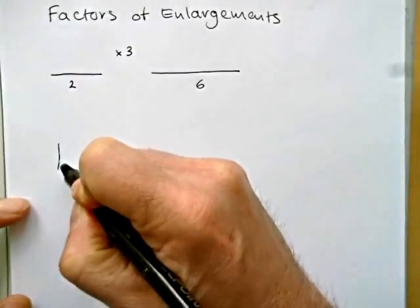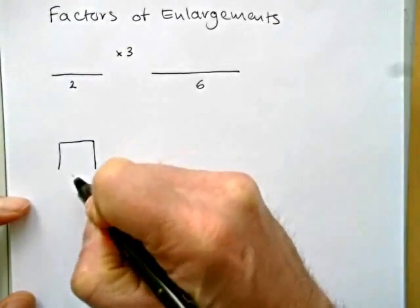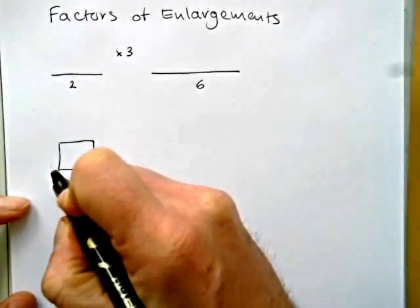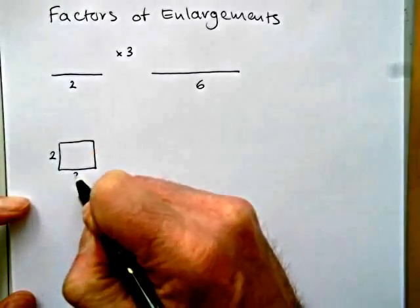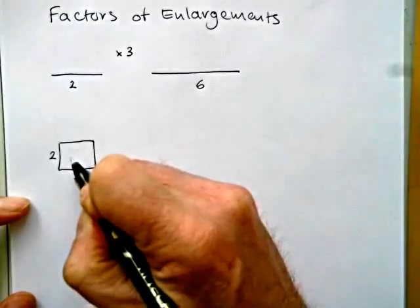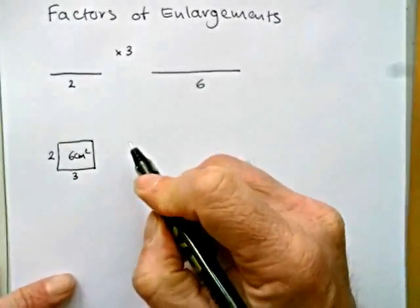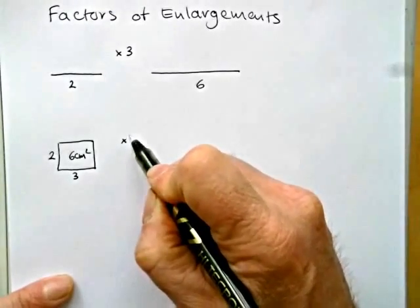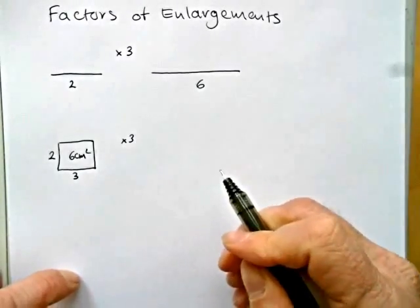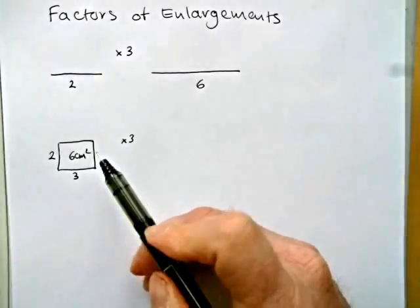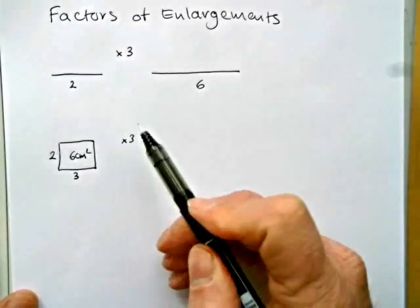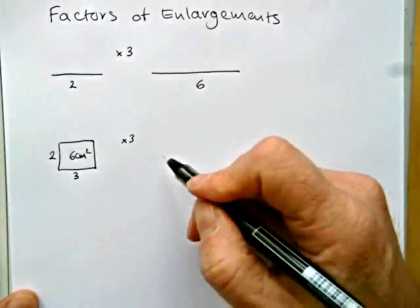But if I have an area, say, and let's say that this area is a 2 by 3 centimeter squared with a 6 centimeter squared area, then what will happen to that if I apply an enlargement factor of 3? A lot of people are tempted to think that it's just simply 6 times 3 and the answer will be 18. But that's not the case,